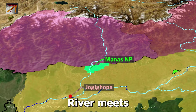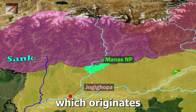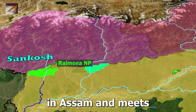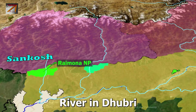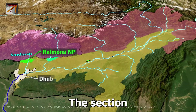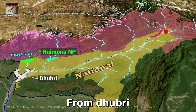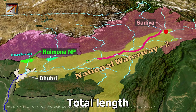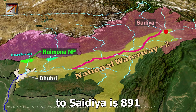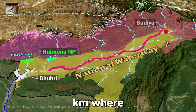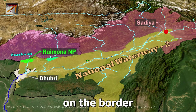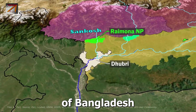Further downstream, Brahmaputra meets the Sankosh River, which originates in Bhutan, flows through Raimona National Park in Assam, and meets Brahmaputra at Dhubri. The section of Brahmaputra from Dhubri to Sadia, a total length of 891 km, is declared as National Waterway 2. Sadia is located in Assam at the confluence of the Lohit and Dibang rivers, and Dhubri is located on the border of Bangladesh.